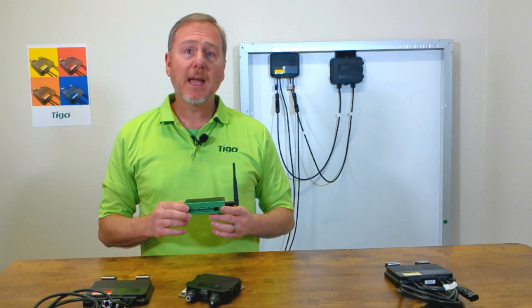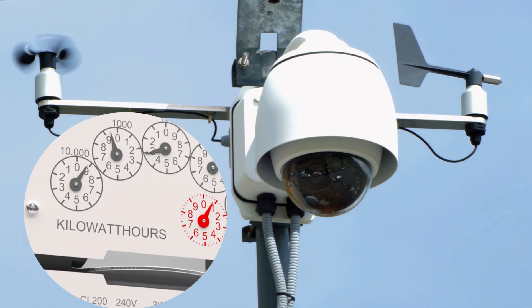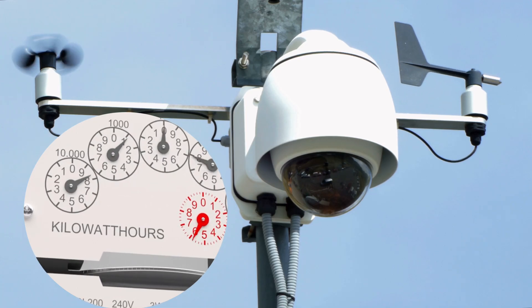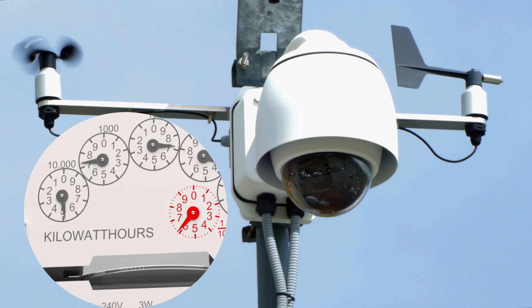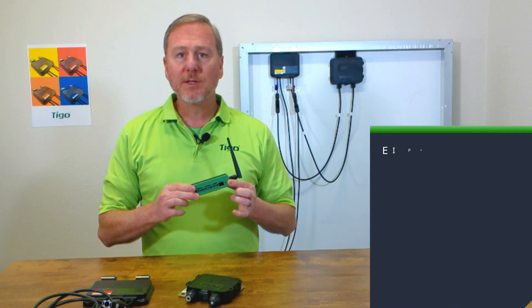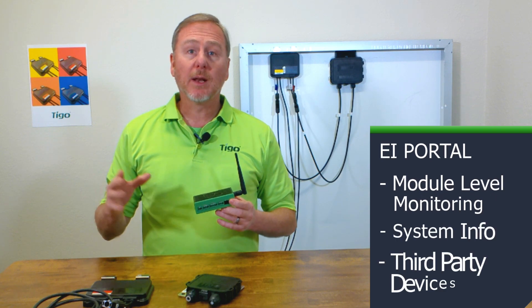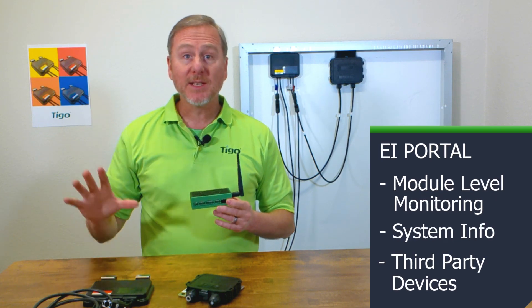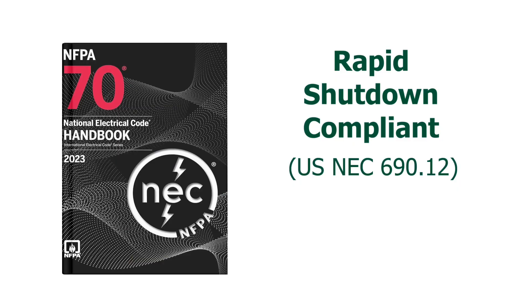The CCA can also be connected to third-party instrumentation such as current transformers or weather devices. It gathers this information and sends it to the cloud, where it can be presented on a single display. The CCA is also responsible for rapid shutdown.